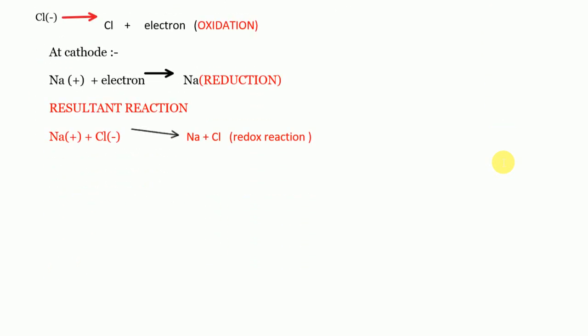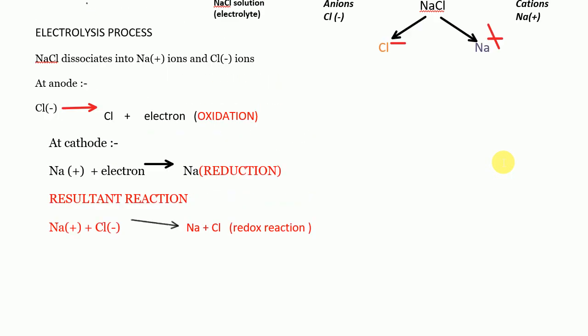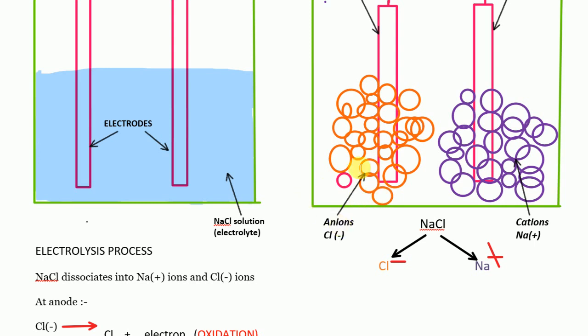One important point: the electrolyte as a whole remains neutral during the process of electrolysis, because equal numbers of charges are neutralized at the electrodes. The electron lost by Cl⁻ is gained by Na⁺, so the overall loss is nothing — the electron is lost at one electrode and gained at the other. Therefore, this electrolyte as a whole always remains neutral.